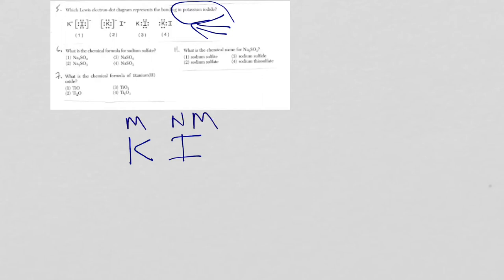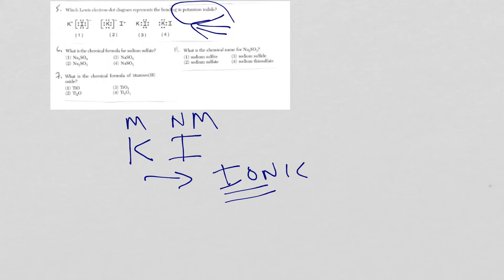So, bonding in potassium iodide: since potassium is a metal and iodine is a non-metal, the type of bonding is ionic. The word 'ion' is in ionic, so that means there's a transfer of one electron from potassium to iodine, which makes potassium positive and iodine negative. When you look at the choices, the only one that makes sense — because you have to have the charges and at least the bracket around the negative ion, which is the iodide ion — would be choice one.